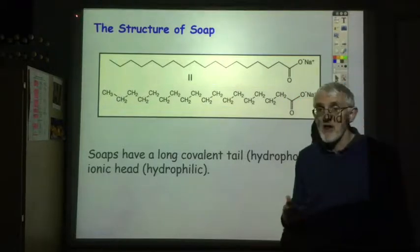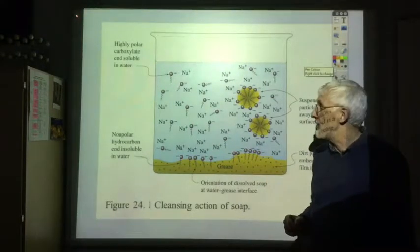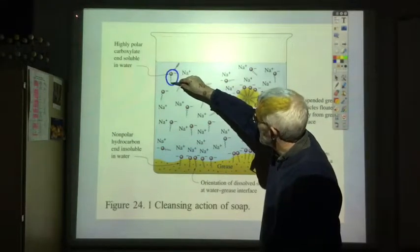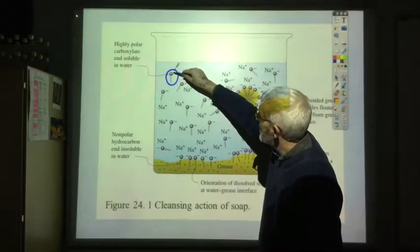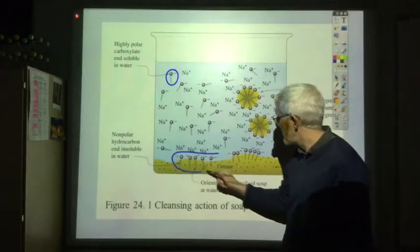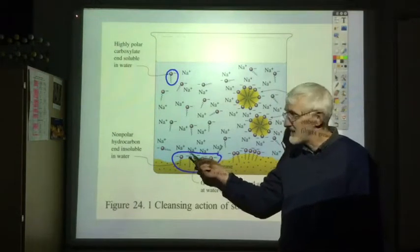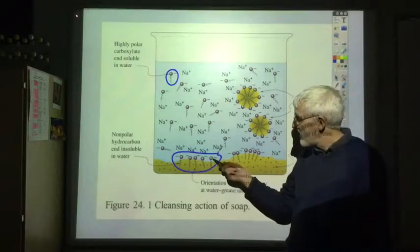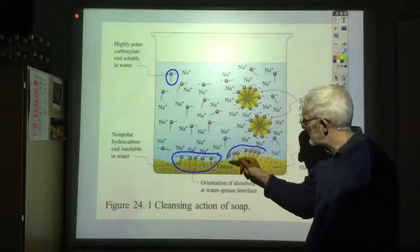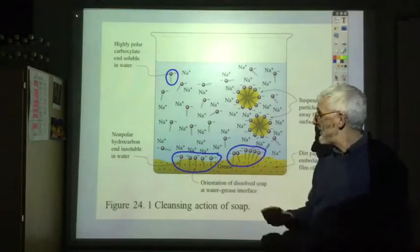Now we want to look at how that structure allows it to function as a soap. Here's a soap molecule with the black zigzag covalent tail and the ball with the minus sign as the ionic head. Looking at the diagram, all the soap molecules have the covalent tail dissolving in the non-polar grease, with the ionic head sticking up into the water. All these negative charges repel each other, which is quite an unstable arrangement, and it starts to pull the grease apart as the negative charges try to get further away from each other, so eventually the grease comes away forming a ball.